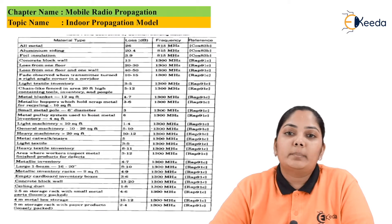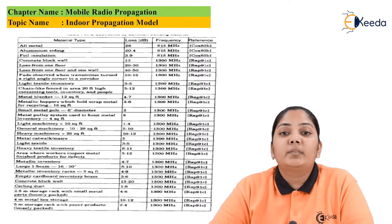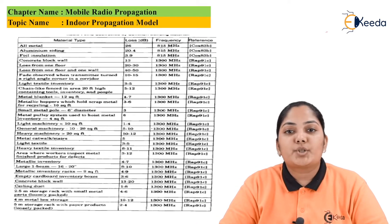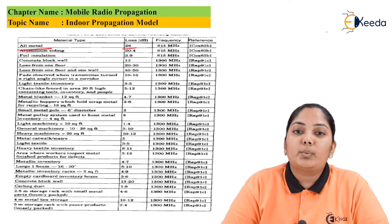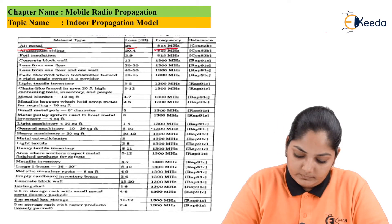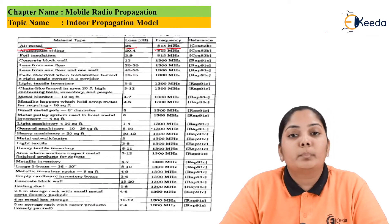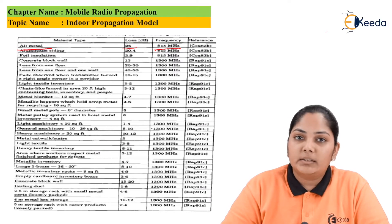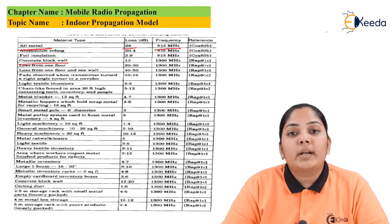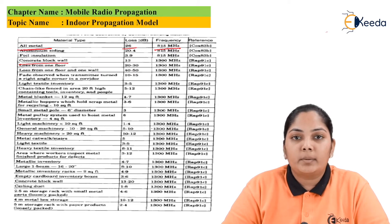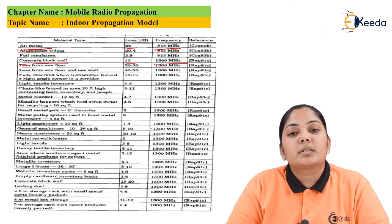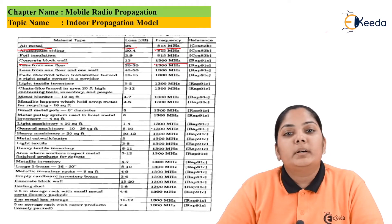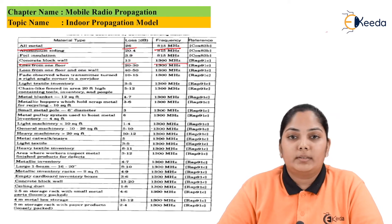In the next figure, we can see a database of different materials and their attenuation factors. The very first one — all metals — gives a loss of 26 dB at a frequency in the range of 815 MHz. Similarly, various materials give different losses at different frequencies. For example, a concrete block wall gives an attenuation of 13 dB at 1300 MHz. Various databases are provided for different materials at different frequencies with the attenuation factor, which is the loss calculated in dB.